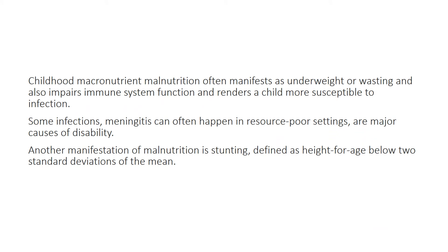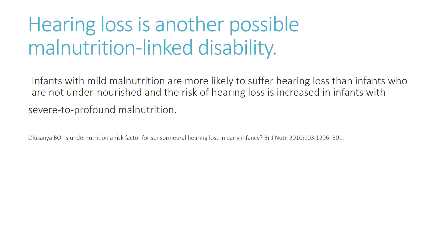Childhood micronutrient malnutrition often manifests as underweight or wasting and impairs immune system function, rendering the child more susceptible to infection. Infections, particularly meningitis in resource-poor settings, are major causes of disability. Stunting, defined as height-for-age below two standard deviations, is another manifestation of malnutrition. Hearing loss is another possible malnutrition-linked disability — infants with malnutrition are more likely to suffer hearing loss, with the risk increased in severe to profound malnutrition, according to a study by Ali Sanya published in the British Journal of Nutrition in 2001.